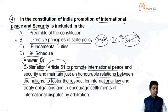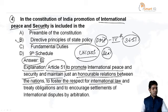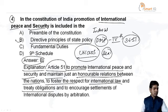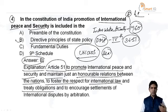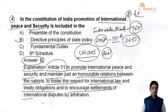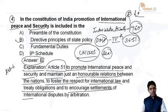Article 51 also directs to foster respect for international law — for example, the United Nations Convention on the Law of the Sea, which is related to seas and oceans. These international laws should be respected. For example, the Indus Water Treaty between India and Pakistan is one such treaty. Countries must respect international treaties and obligations and encourage settlement of international disputes by arbitration. That is why promotion of international peace and security is included in the DPSP.